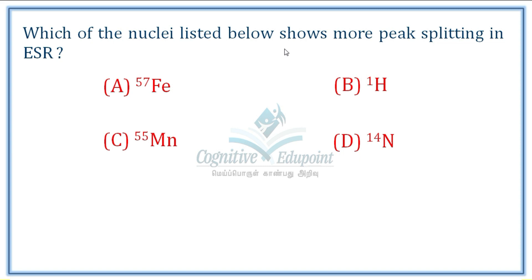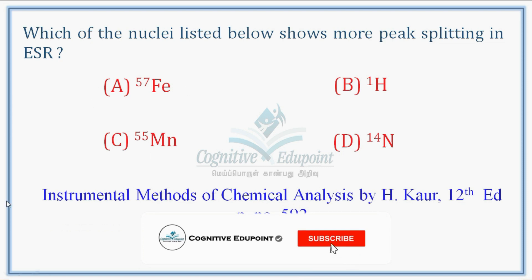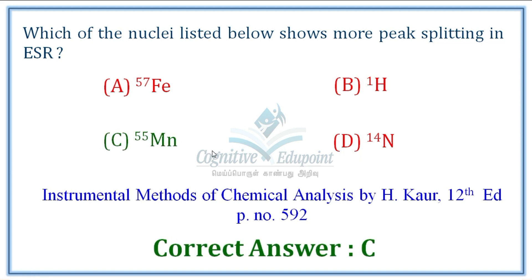Next question: Which of the nuclei listed below shows more peak splitting in ESR? In electron spin resonance, the number of unpaired electrons determines the splitting. Among the ions Fe³⁺, and Mn²⁺, manganese has the maximum number of unpaired electrons — 5 — giving the maximum number of signals. Manganese shows the highest peak splitting in the given options. The correct answer is C, manganese.